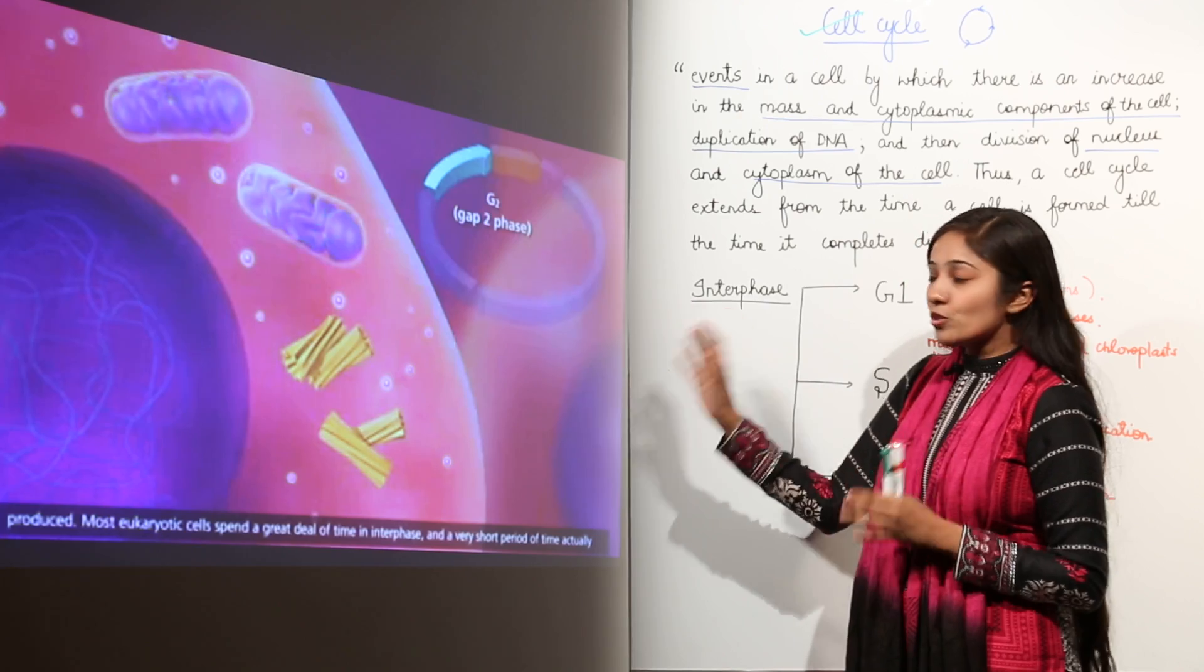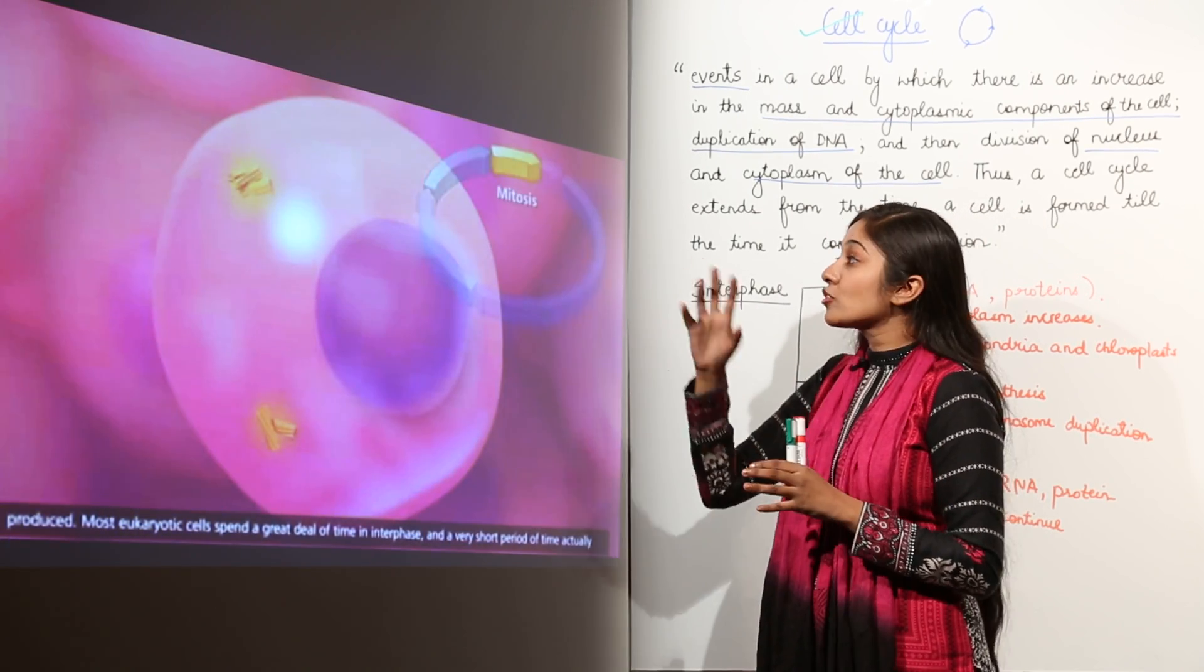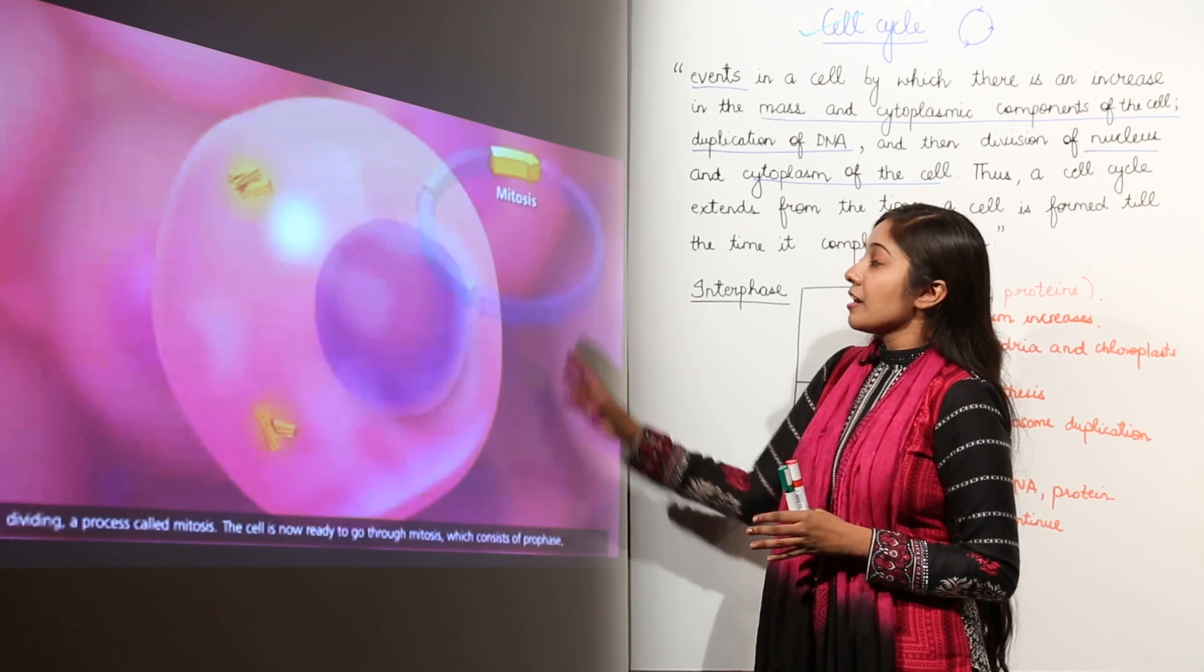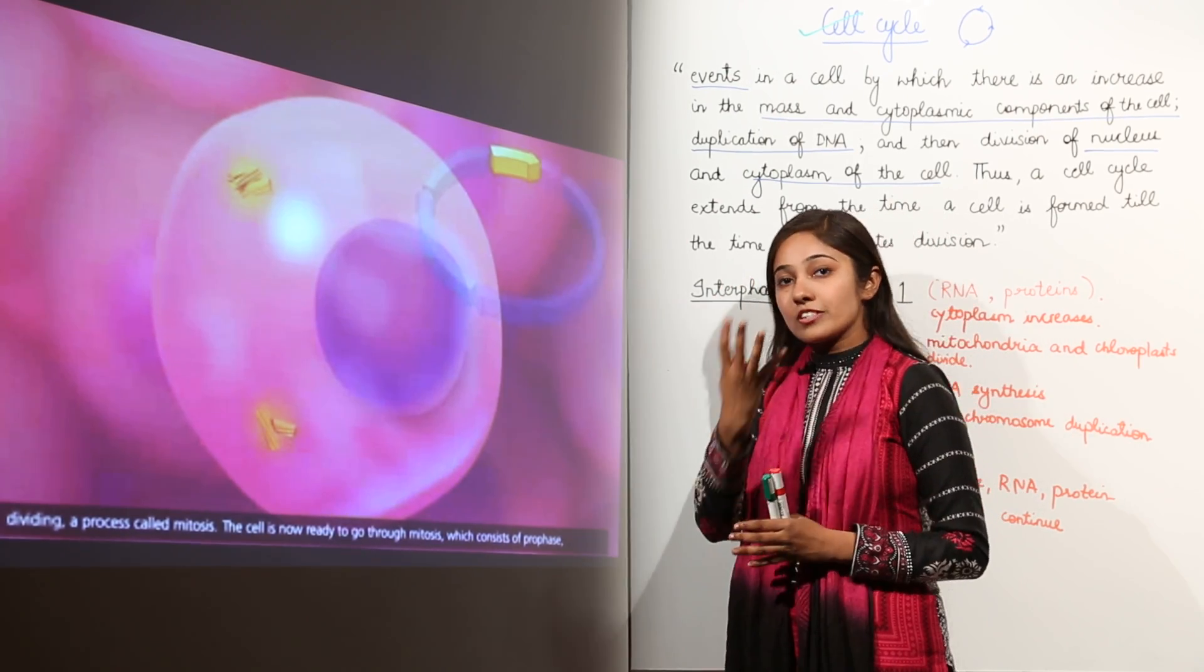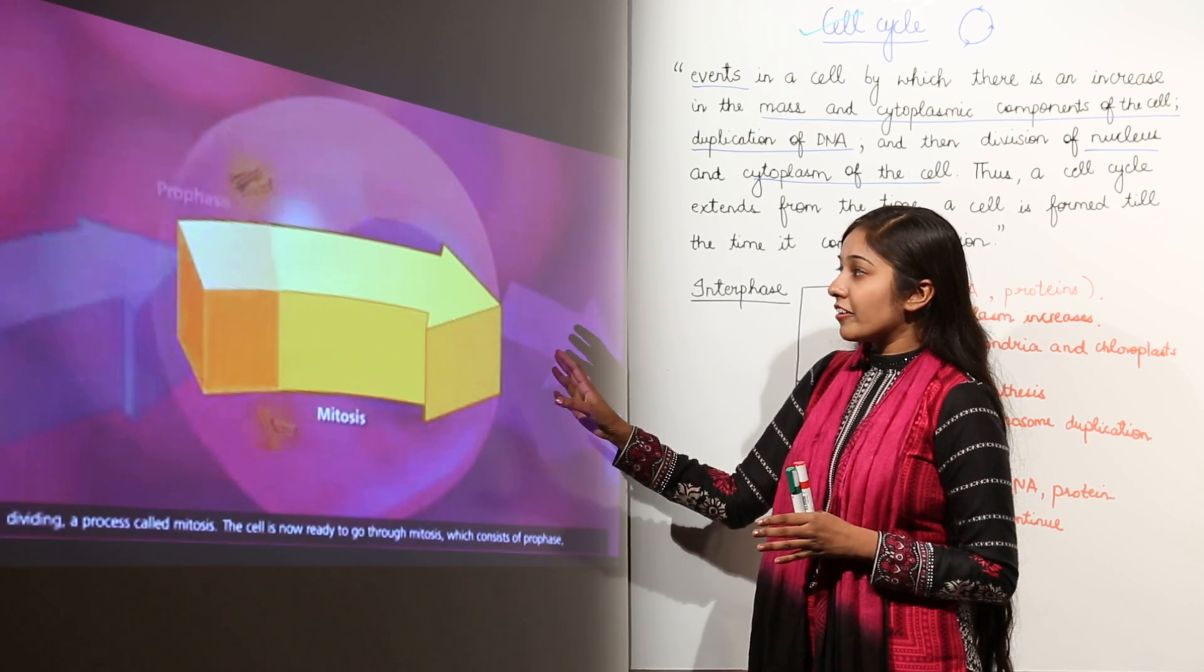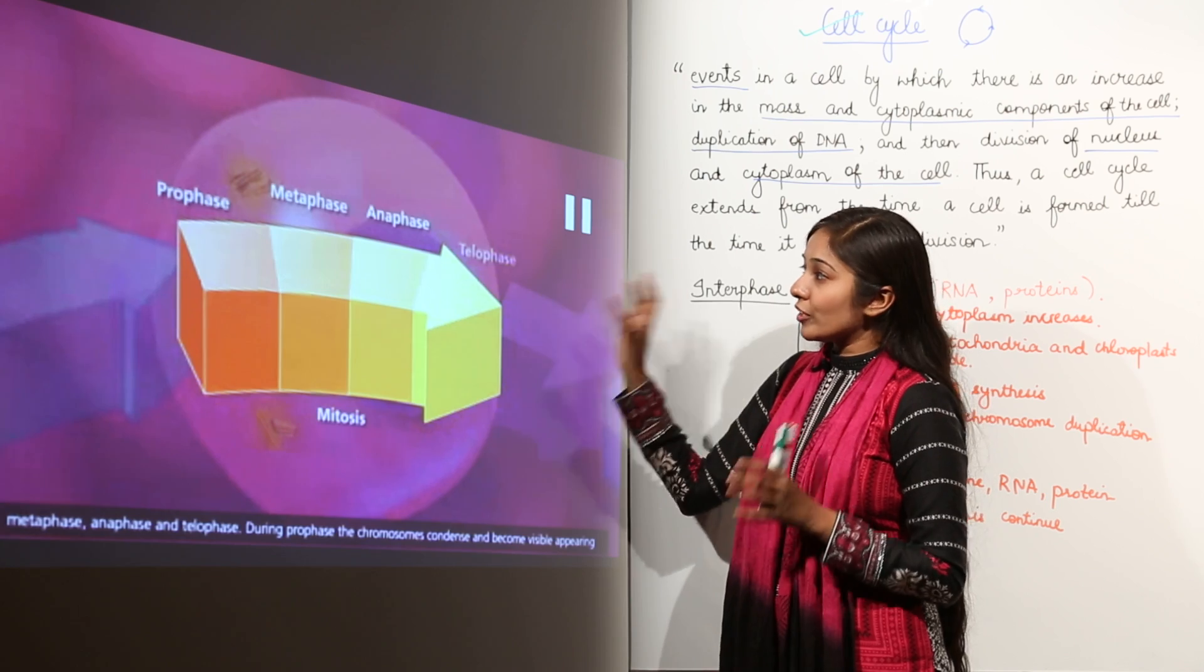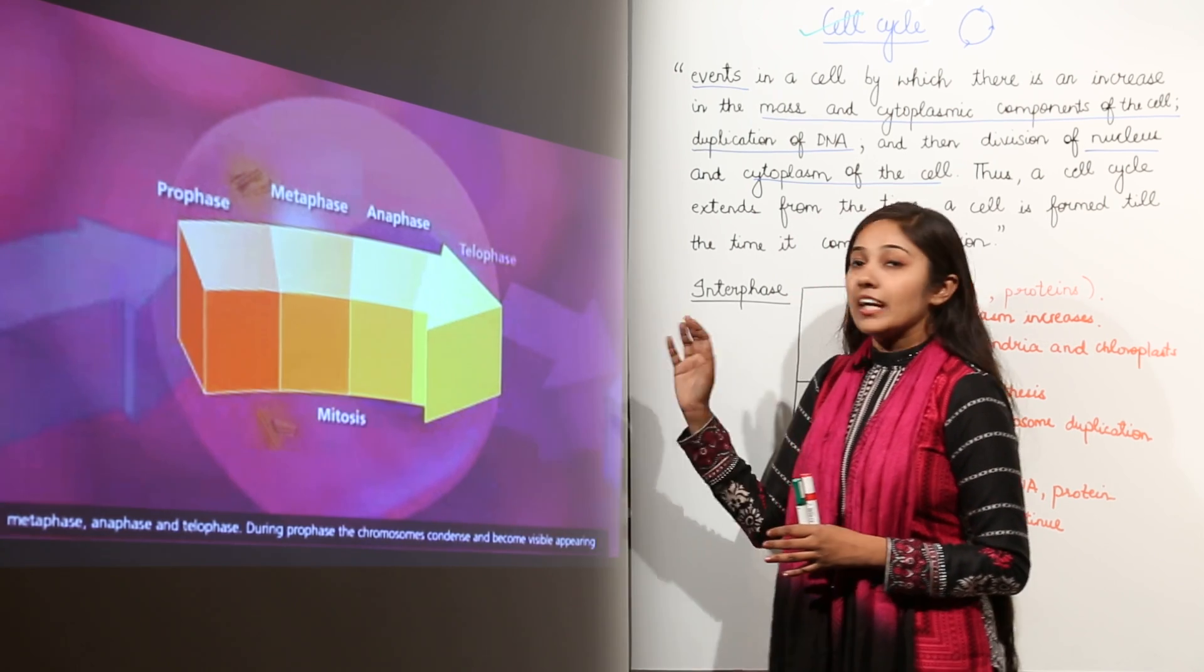So after this G2 phase, the cell enters the phase that is M phase, mitotic phase in which mitosis occurs. Mitosis has four stages: we have prophase, metaphase, anaphase, and telophase. I hope you all are able to now recall everything and this will help you.